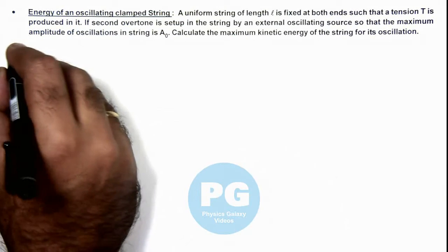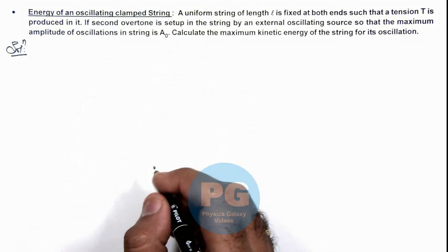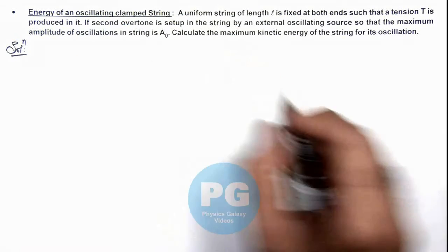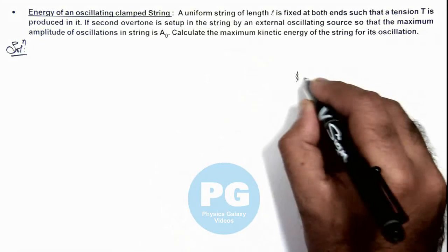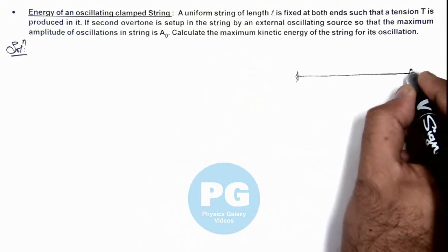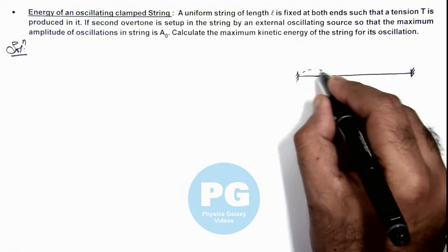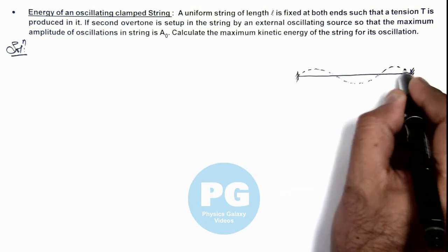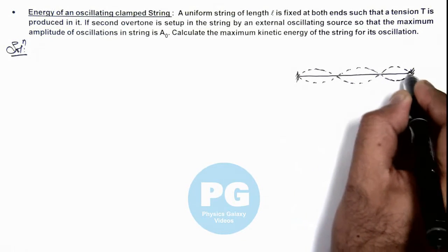Now in this situation for solution we can first draw the figure of this string where second overtone is set up which is corresponding to third harmonic oscillations. If the string is clamped between two fixed clamps then it'll be oscillating in three loops as we are given that second overtone is induced in it.